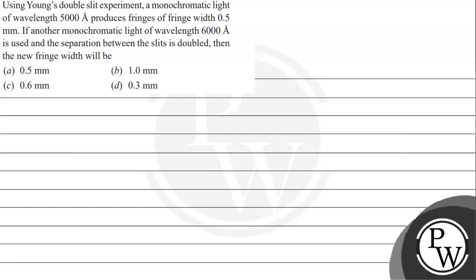Hello Achoh, let's take a given question. The question says using Young's double slit experiment a monochromatic light of wavelength 5000 angstrom produces fringes of fringe width 0.5 mm. If another monochromatic light of wavelength 6000 angstrom is used and the separation between the slits is doubled, then the new fringe width will be: option A 0.5 mm, option B 1 mm, option C 0.6 mm, option D 0.3 mm.